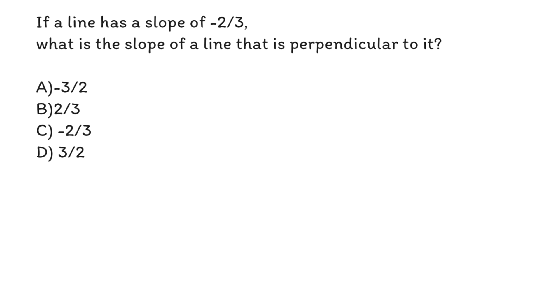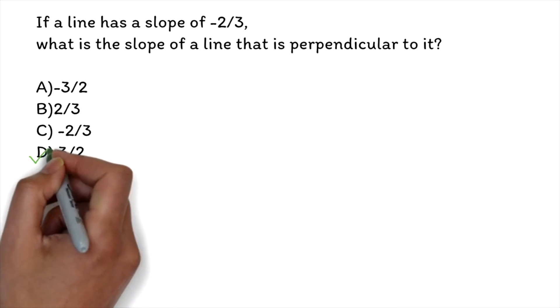If a line has a slope of -2/3, what is the slope of a line that is perpendicular to it? A) -3/2, B) 2/3, C) -2/3, D) 3/2. The correct answer is D, 3/2.